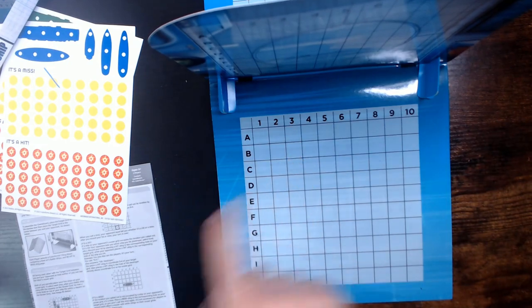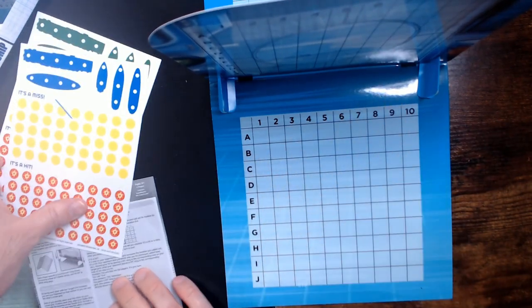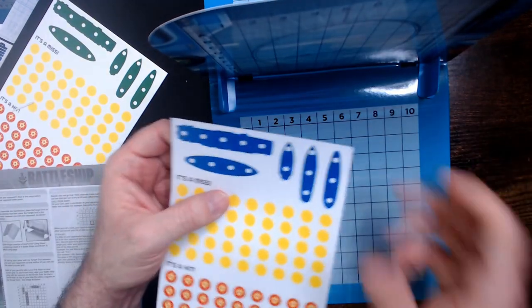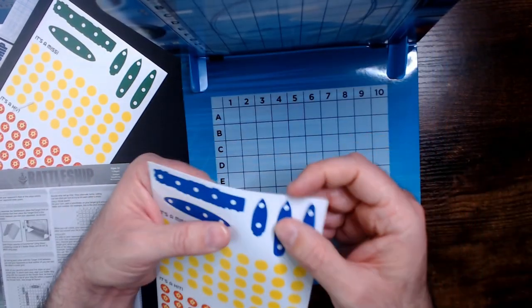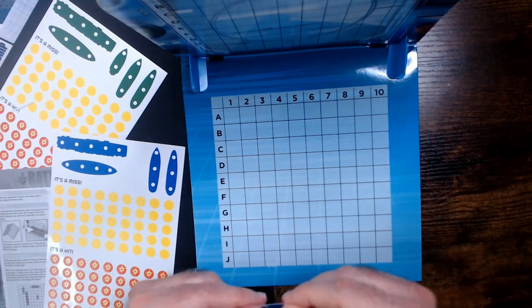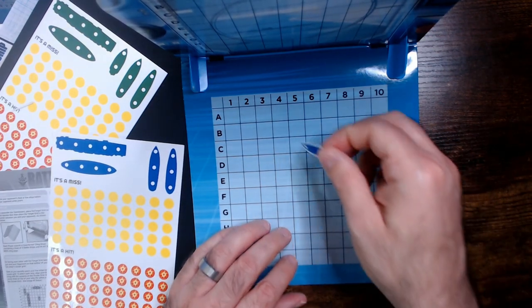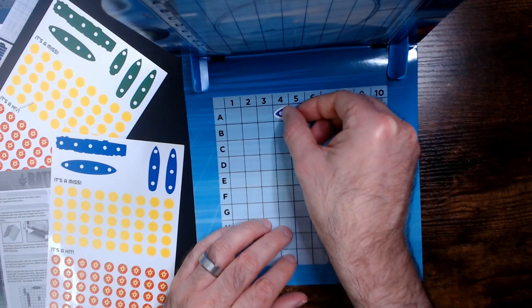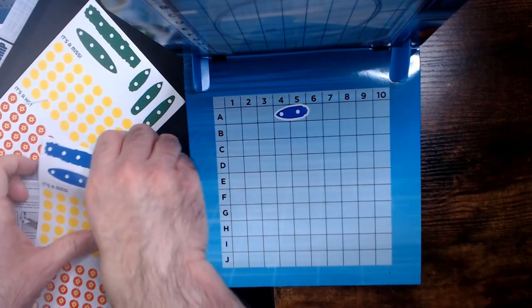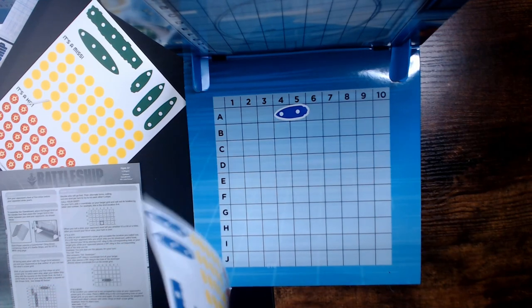Of course it plays like regular Battleship. You can say a grid, A2, then they're going to put hit or miss. Let's see how well these stick. Let's set up our board for the blue. So I will put this at A4, 5, like that. We'll just stick a couple ships in.